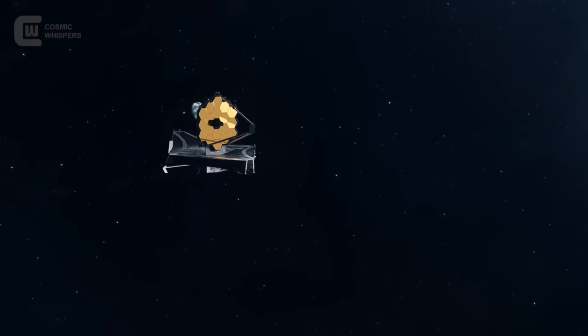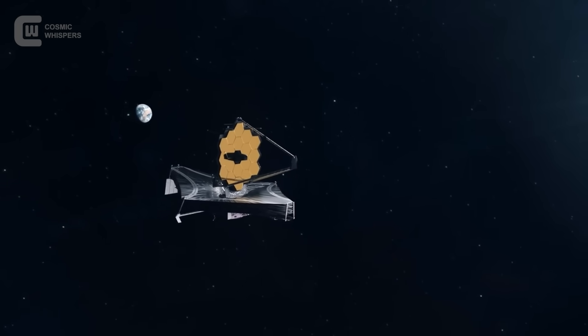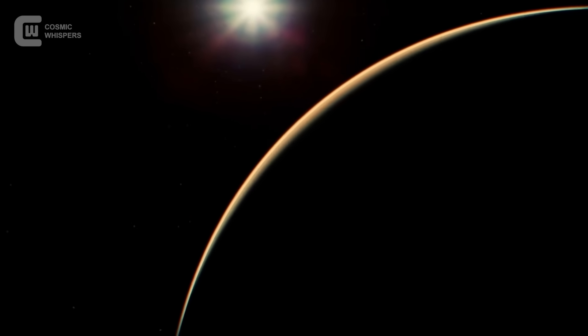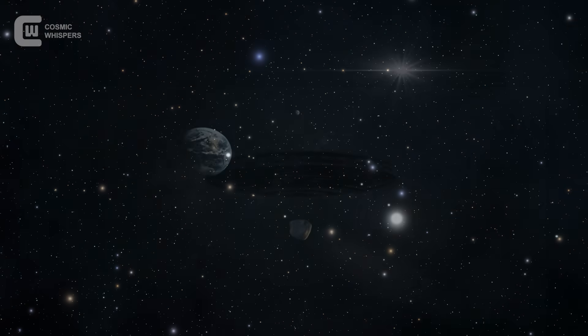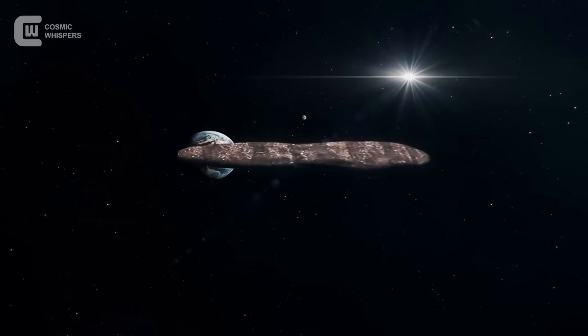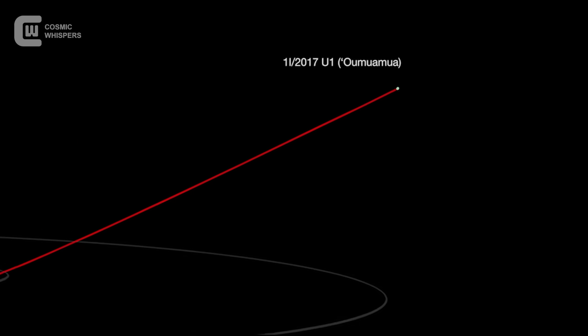In November 2024, the James Webb Space Telescope detected something strange. A faint infrared signature drifting far beyond the planets, with no visible object in sight. But its trajectory matched something we've seen only once before. It aligned perfectly with the predicted path of Oumuamua, the first confirmed interstellar object ever discovered.